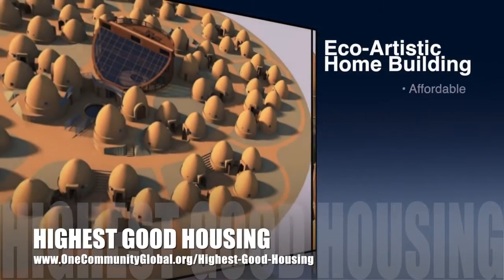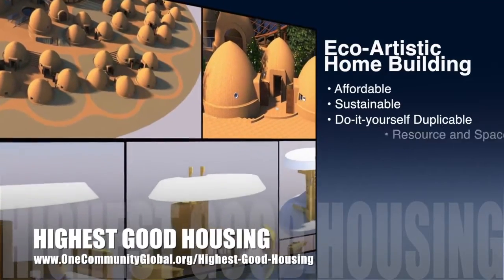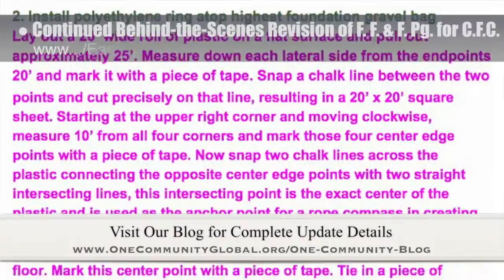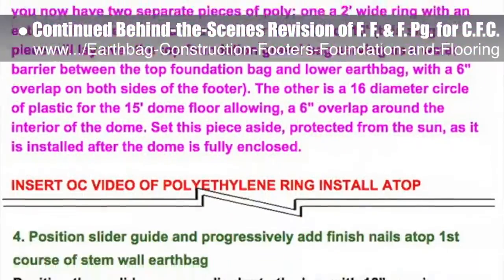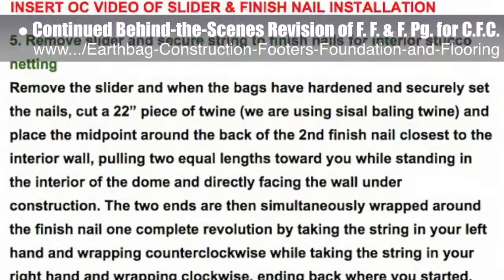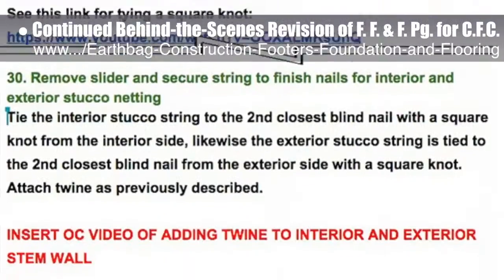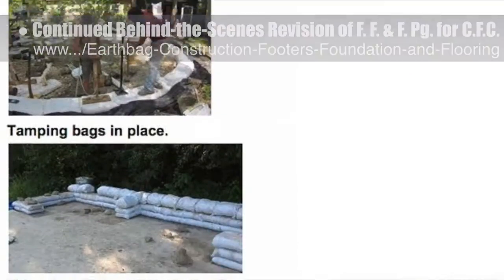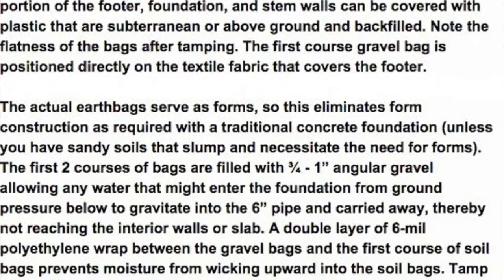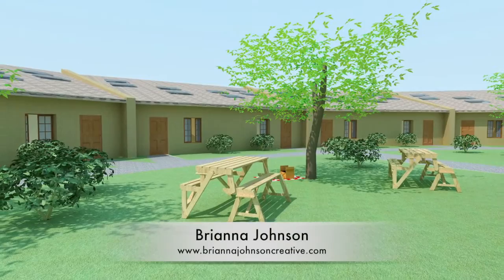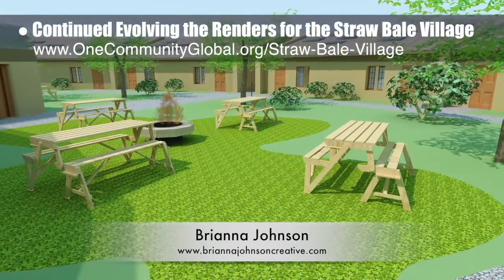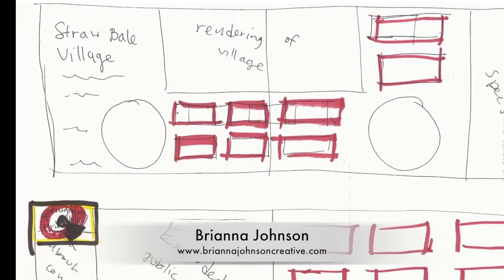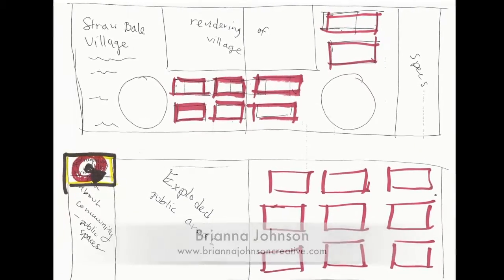One Community's approach to highest good housing is eco-artistic home building that is affordable, sustainable, do-it-yourself, duplicable, resource and space efficient, and consists of seven different sustainably constructed village models. This week the core team put another 10 hours into the behind-the-scenes revision for the footers, foundations, and flooring page for the crowdfunding campaign. We continued the thorough review of section 10 — construction of stem wall and dome — adding necessary repeating steps like removal of the slider and securing string to the finish nails for the interior stucco netting. We also added several new steps to section 9, foundation construction, and are now 84 percent complete with this total update and rewrite. Brianna Johnson, interior designer, continued evolving the renders for the straw bale village pod 2, including two different outdoor picnic areas and the kids' playground area, plus additional brainstorming on how to improve the online book layout.